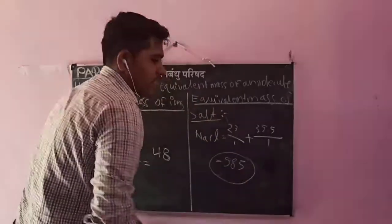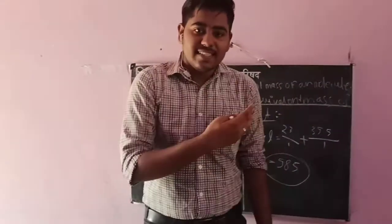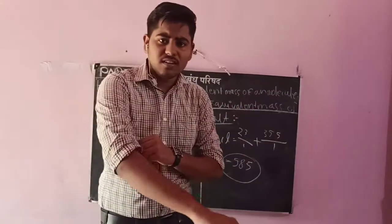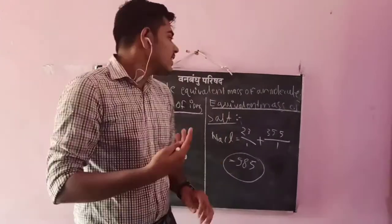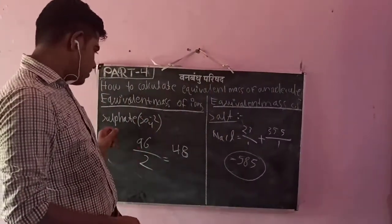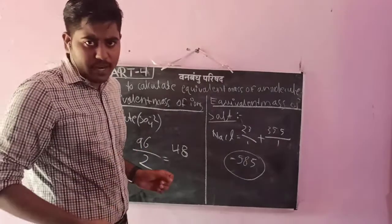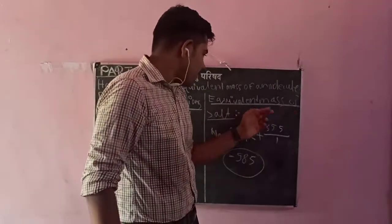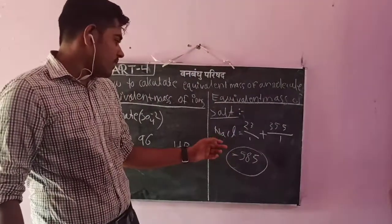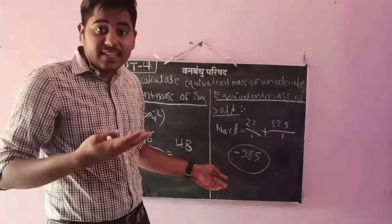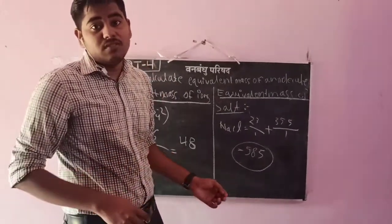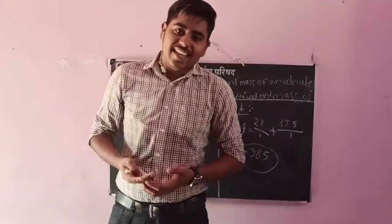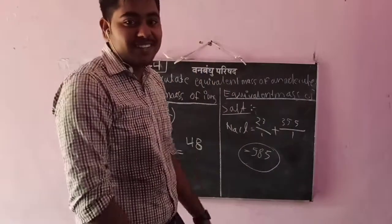This is the correct answer, friends. In this class we learned how to calculate equivalent mass of molecules and elements, equivalent mass of ions like sulphate and phosphate, and equivalent mass of salts like NaCl and magnesium chloride (MgCl2). If you found this video helpful, please like and subscribe. Thank you very much.